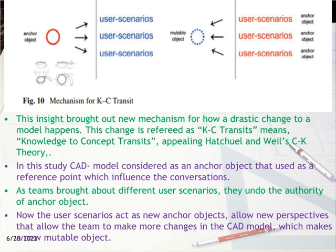CK design theory, or Concept-Knowledge theory, is both a design theory and a theory of reasoning in design. It defines design reasoning as a logic of expansion processes — a logic that organizes the generation of unknown objects. In this study, the CAD model was considered an anchor object used as a reference point that influenced conversations. As teams brought about different user scenarios, they undid the authority of the anchor object. The user scenarios then acted as new anchor objects, allowing new perspectives that enabled the team to make more changes in the CAD model, creating a new mutable object.